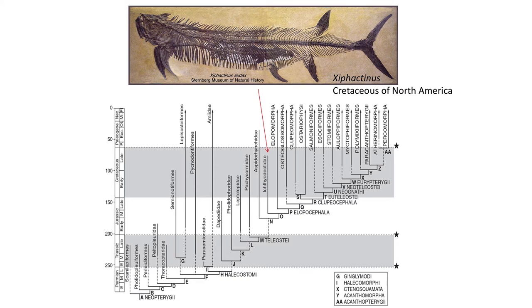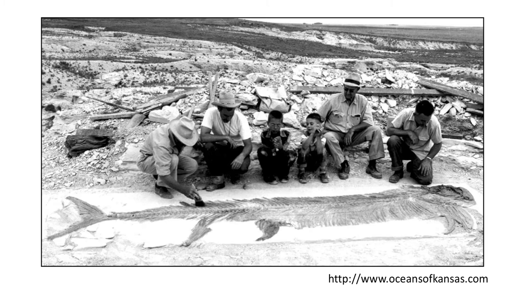The closely related Ichthyodectidae, another Mesozoic fish group that arose during the Cretaceous and reached really large sizes, includes the famous Xiphactinus from the Cretaceous of North America. This giant predatory fish raced through the waters of the Western Interior Seaway, with most fossils found in Kansas and Colorado in the marine units of the Mancos and Pierre shales.